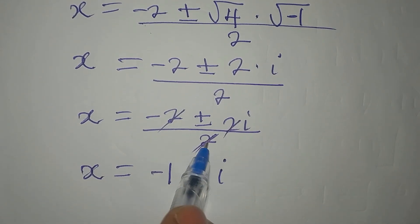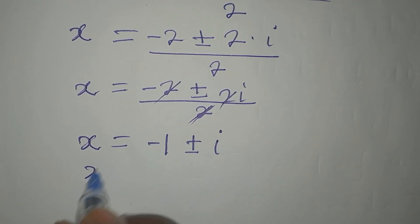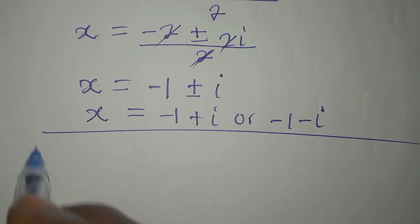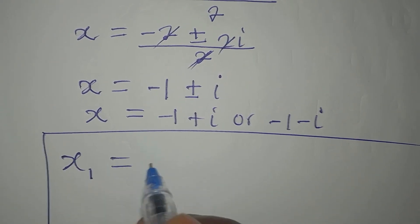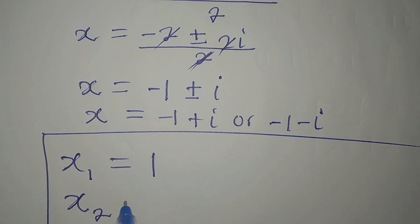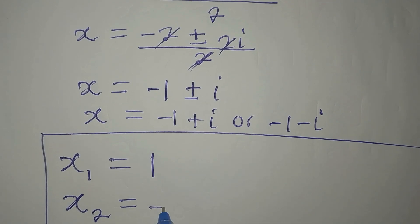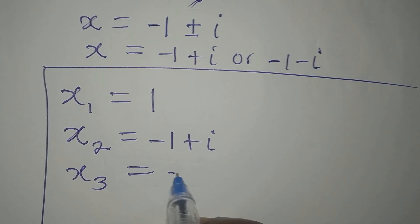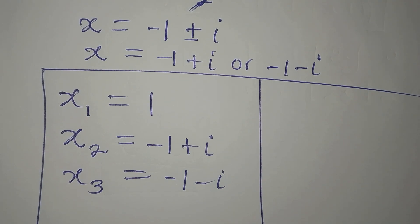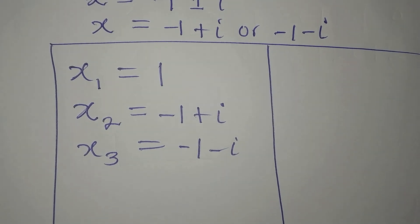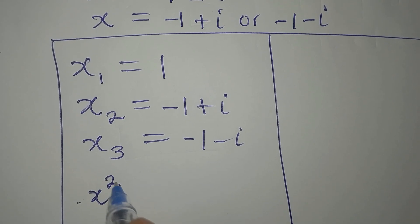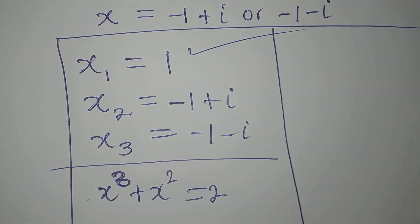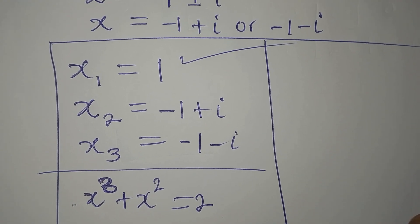This is a two-in-one solution: x equals minus 1 plus i or minus 1 minus i. Let's bring the three solutions together: x₁, the first solution, is equal to 1. Our second solution, x₂, is minus 1 plus i. And our x₃ is minus 1 minus i. These three are the solutions to the equation x to the power of 3 plus x to the power of 2 equals 2. The first solution is the real solution, and the other two are complex solutions, or complex roots.